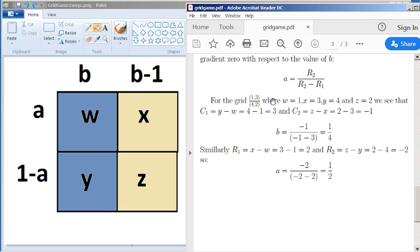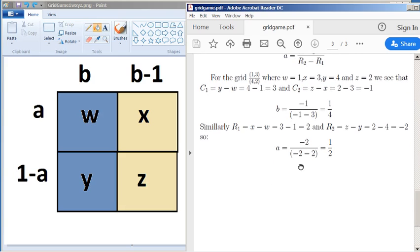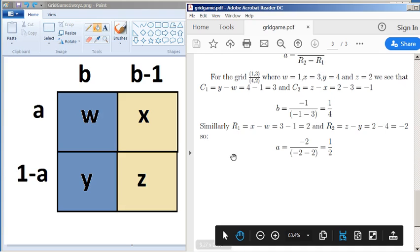And for a simple example, 1, 3, 4, 2, so a grid where we've got 1, 3, 4, 2, that we showed at the beginning. If we put the numbers in, we get that b equals a quarter and a equals a half.